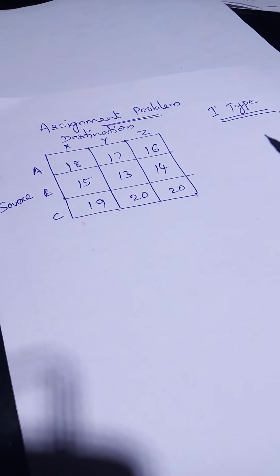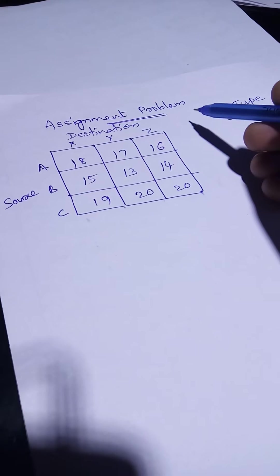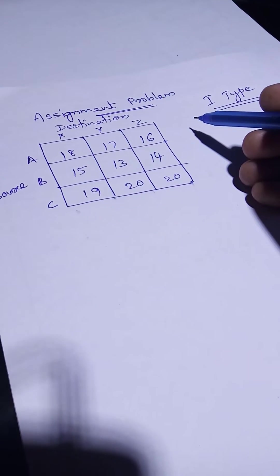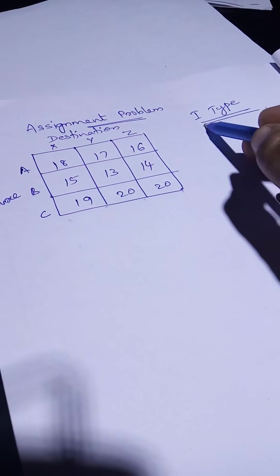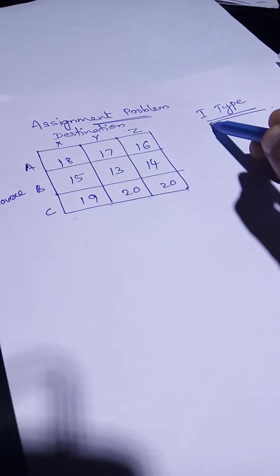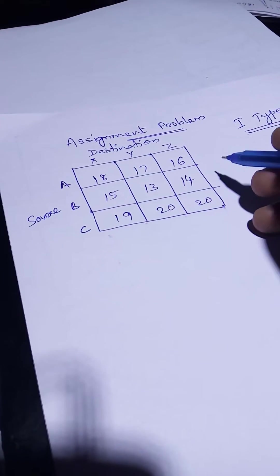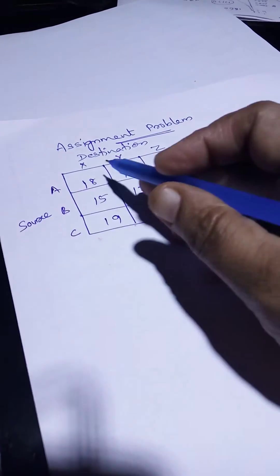Dear students, I will now explain the assignment problem with an example. The assignment problem can be solved in many methods. The first method is Type 1 — this is the simplest method. Consider the example where ABC is the source.